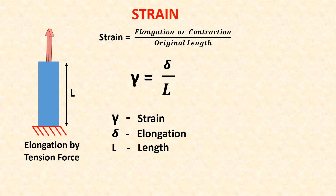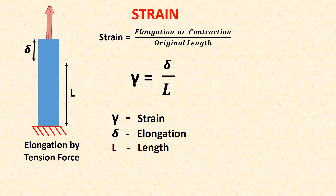Strain is equal to elongation or contraction over original length. Gamma is the common notation for strain. Gamma is equal to delta over L, where delta is elongation and L is original length.